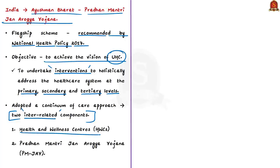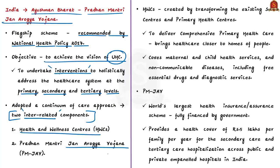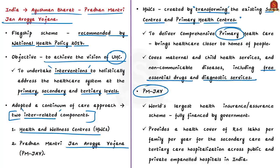The two components are health and wellness centers and Pradhan Mantri Jan Arogya Yojana. Health and wellness centers are created by transforming existing sub-centers and primary health centers, and will deliver comprehensive primary healthcare closer to the homes of people. These centers cover both maternal and child health services, non-communicable diseases, and also provide free essential drugs and diagnostic services. Pradhan Mantri Jan Arogya Yojana is the world's largest health insurance or assurance scheme, fully financed by the Government, providing a health cover of Rs. 5 lakhs per family per year for secondary and tertiary care hospitalization across public and private empanelled hospitals.